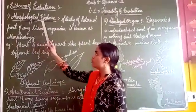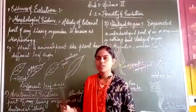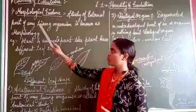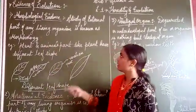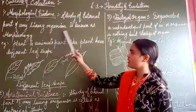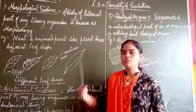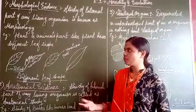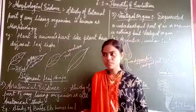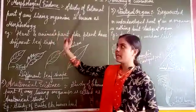So first topic is morphological evidences. So exactly I will explain you what is morphology. Morphology is nothing but we can say the study of external part of any living organism is known as morphology. Whenever we are studying any external part of any living organism — plants, animals, we human beings — that is nothing but morphological evidence.